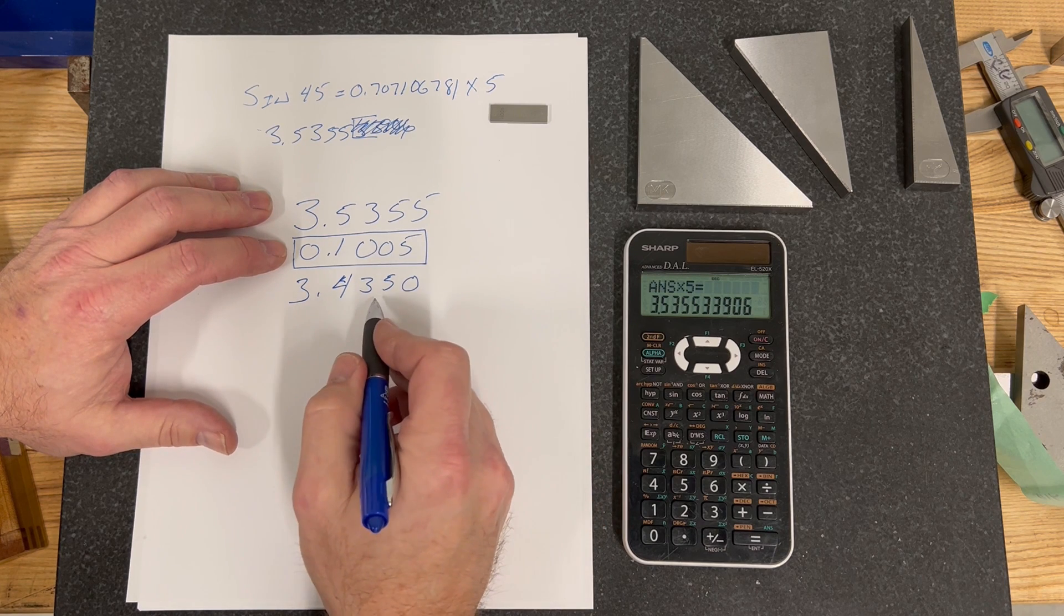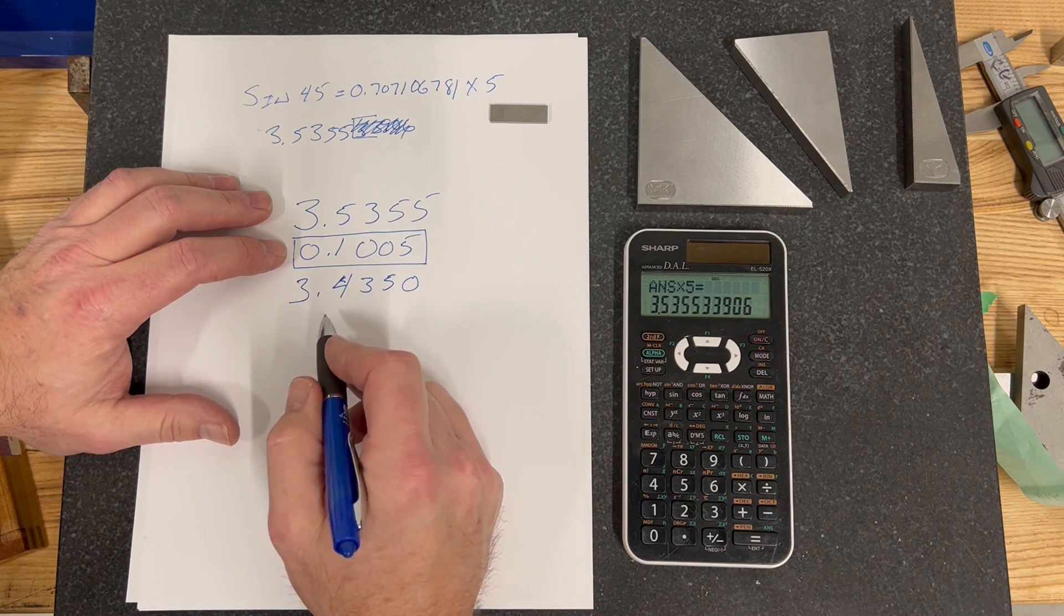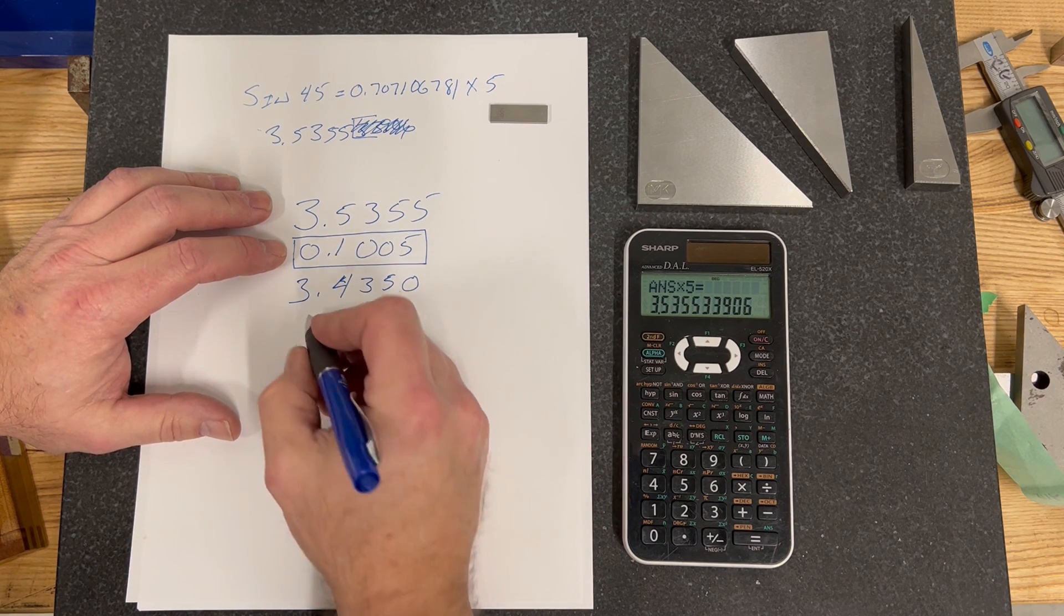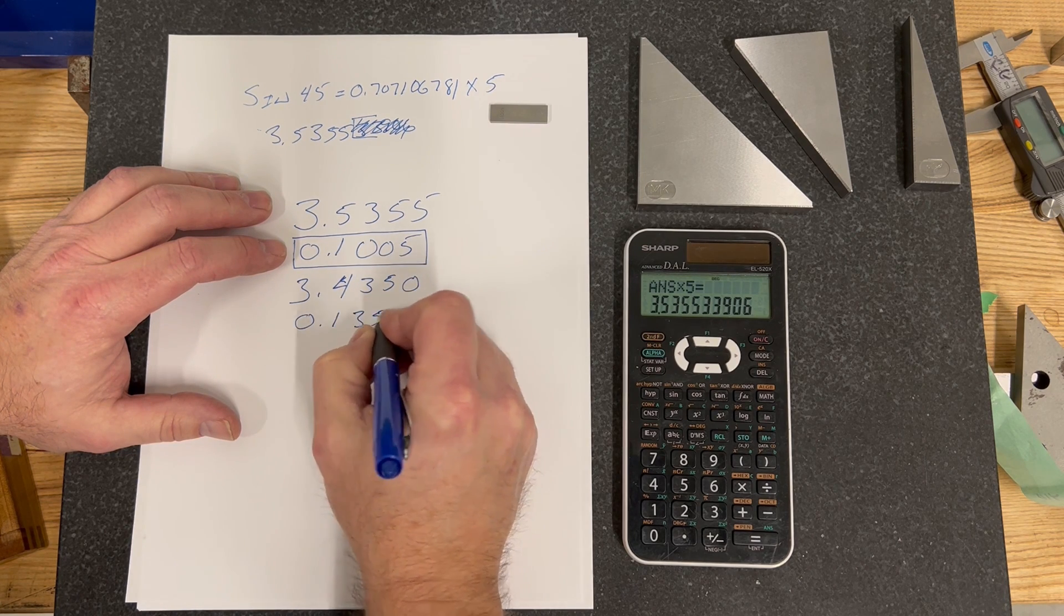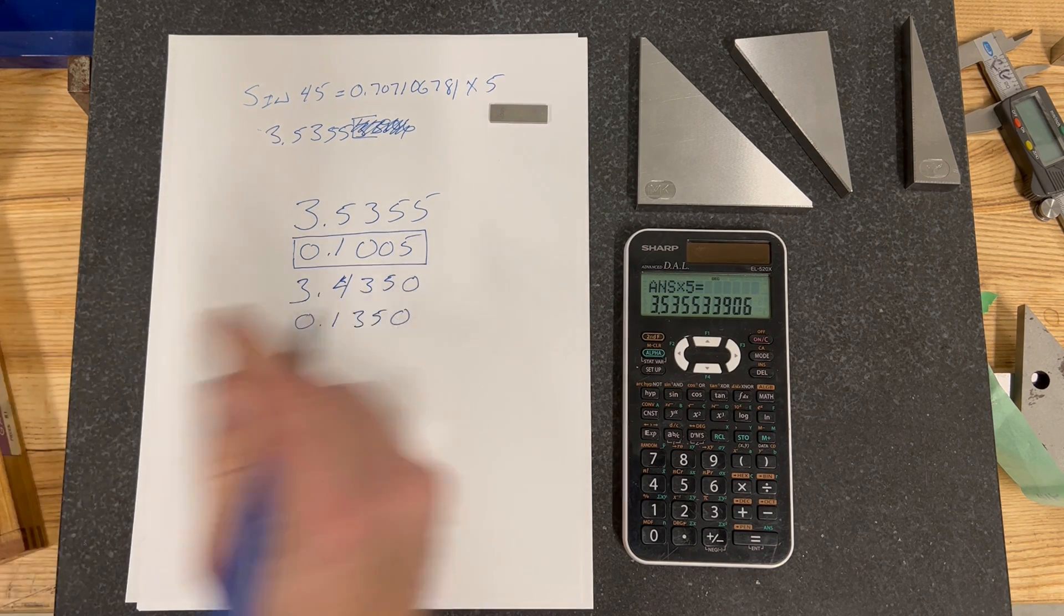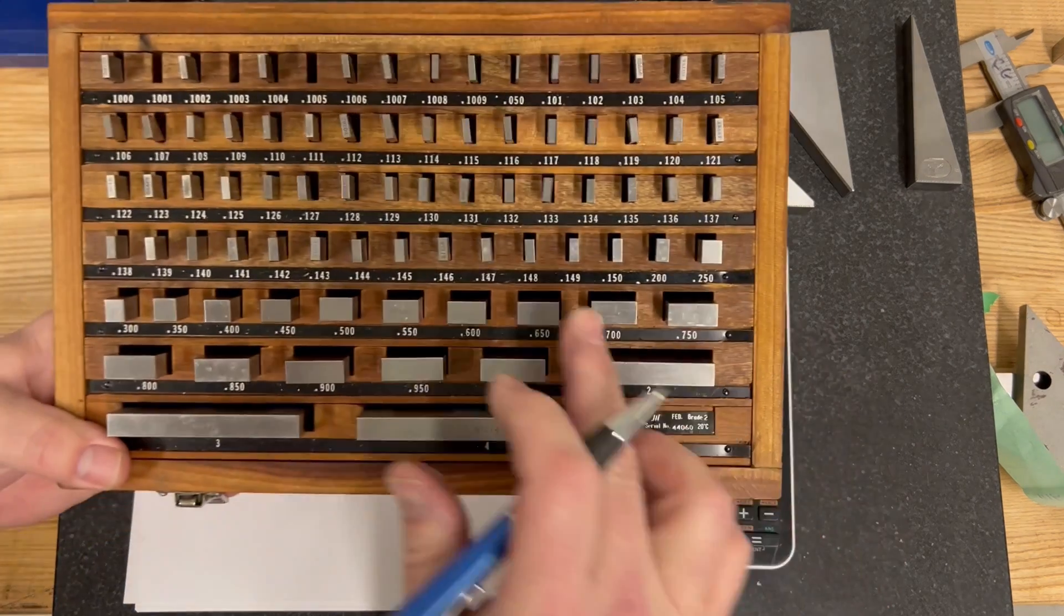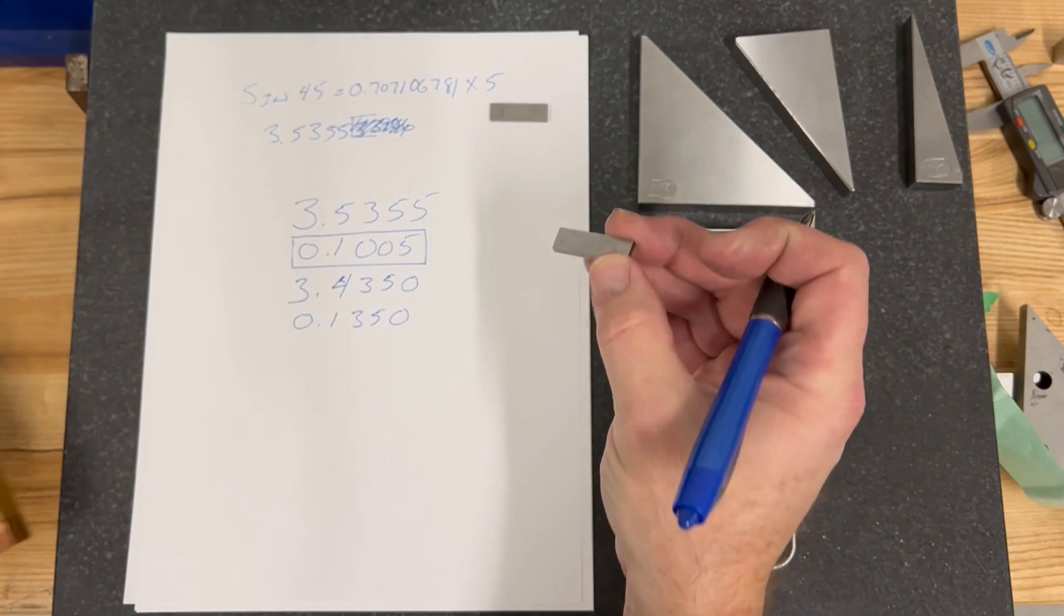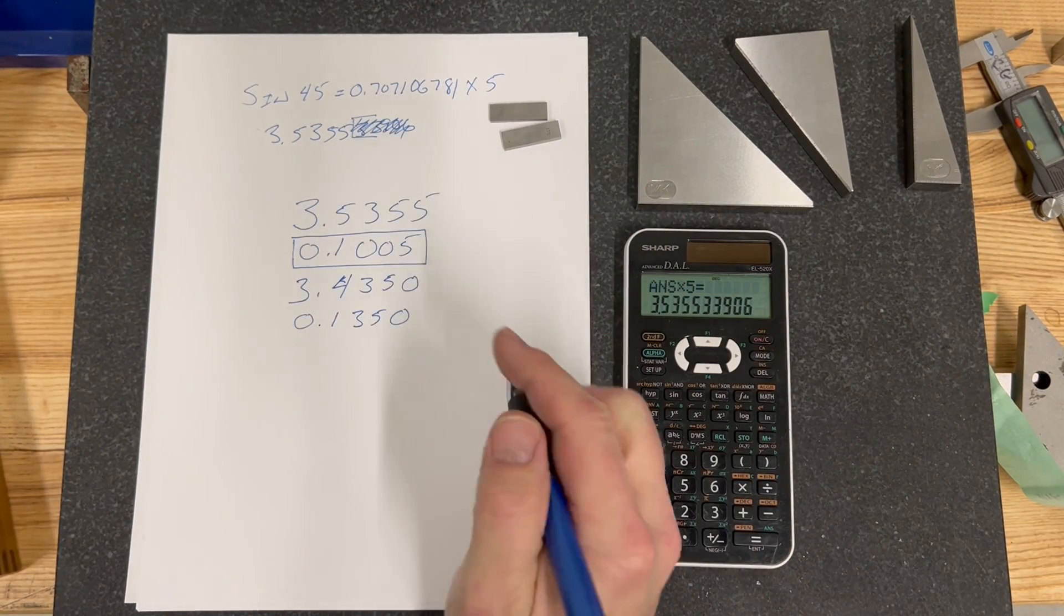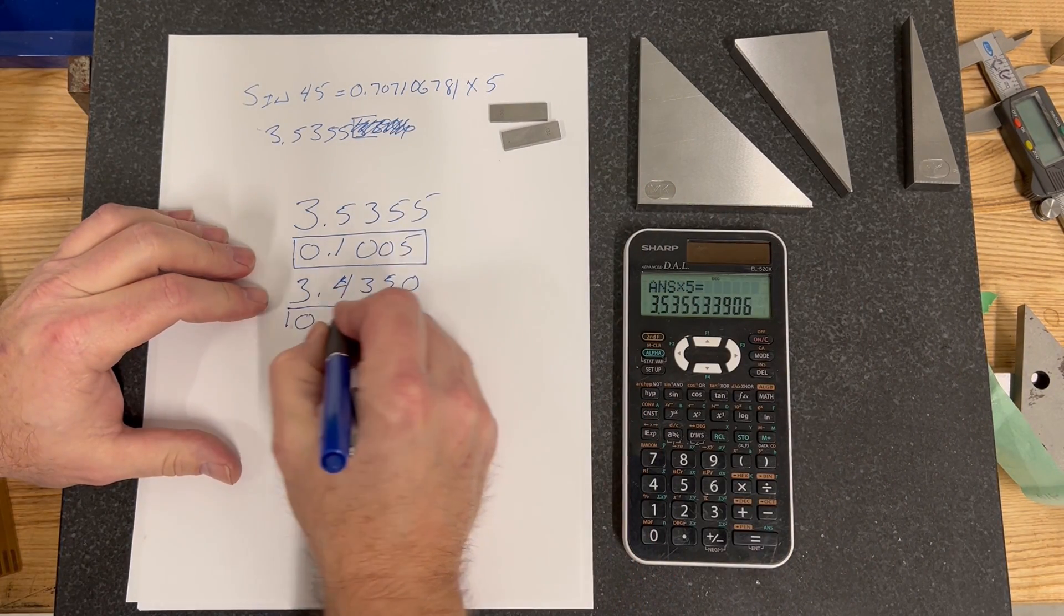Then we're going to get a 35 thou block, or sorry, a 0.135 block. So then it goes 0, 1, 3, 5, 0. So then we go to our gauge block set and we pull out the 135 block. That's our next block.